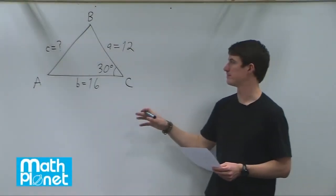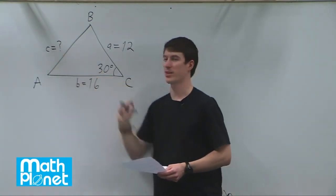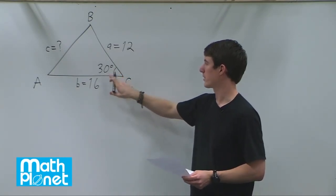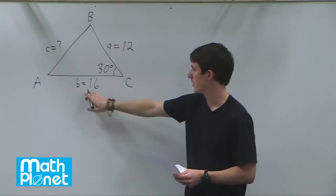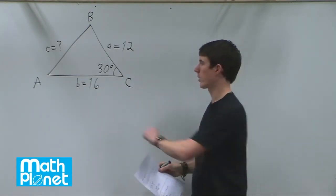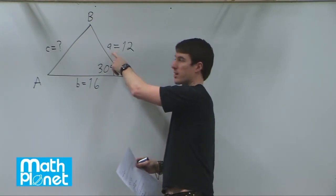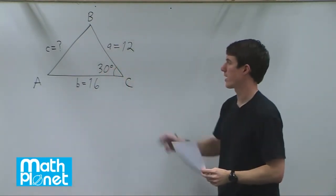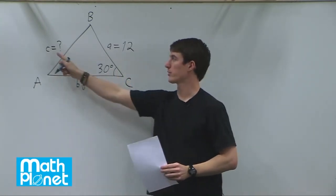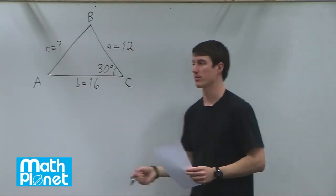For this triangle, we're given some information and want to find length c. We have an ABC triangle where we know angle A is 30 degrees, side a is 16, and side b is 12, labeled so each capital letter angle is opposite the corresponding lowercase side length. We want to find length c. Since we know angle C and are looking for lowercase c, we have to use the law of cosines instead of the law of sines.